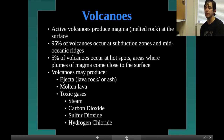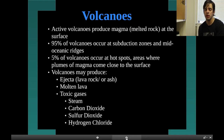Volcanoes: active volcanoes produce magma, which is melted rock on the surface. 95% of volcanoes occur at subduction zones and mid-oceanic ridges. 5% of volcanoes occur at hot spots — areas where plumes of magma come close to the surface. Volcanoes may produce ejecta, which is lava, rock, or ash.